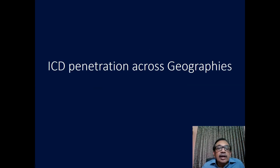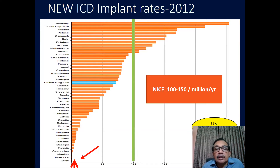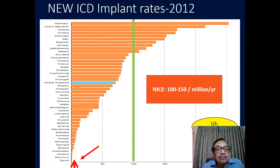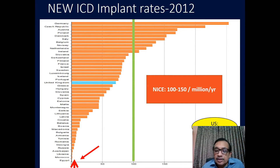If you look at ICD penetration across geographies, you can see that the US has an ICD implant rate of nearly 550 per million. Western geographies such as Germany have about 250 per million, the UK has about 70 to 80 per million, while India and China have roughly about 2 to 4 per million. This difference among geographies is probably related to the economic pattern of these economies, as seen in this graph.